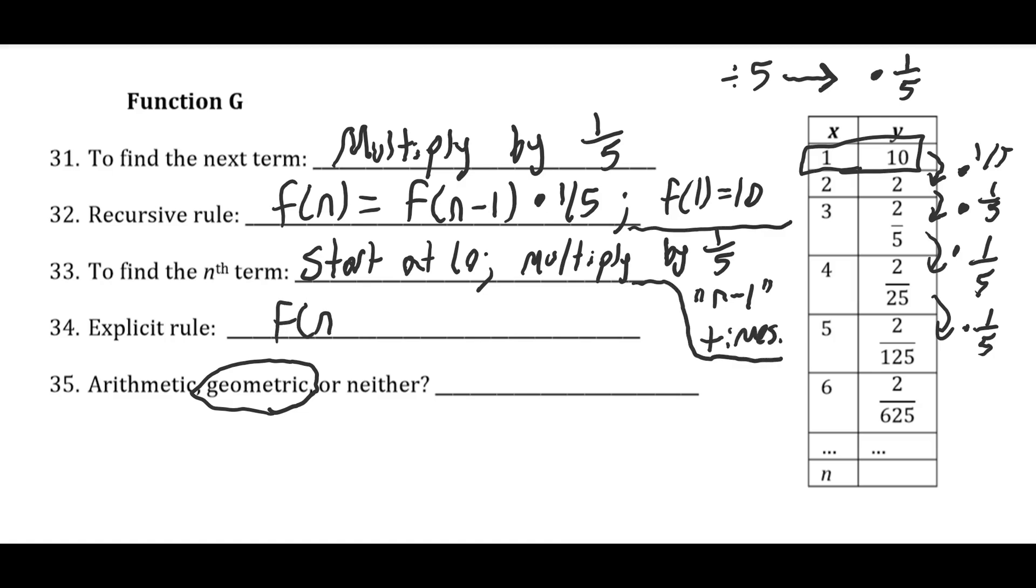And then we can write our explicit rule, f of n equals 10 times 1 fifth to the n minus 1 power. And again, we said this was geometric. Thanks for watching. Hope that helps you with this task. And if you need help with the Ready, Set, Go problems, please check out the Ready, Set, Go student support site in Canvas.